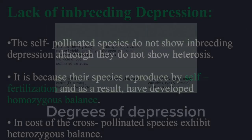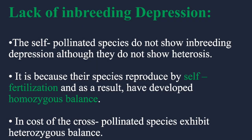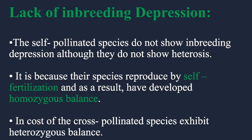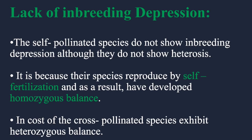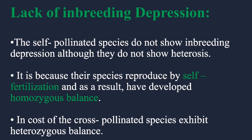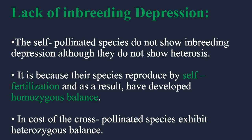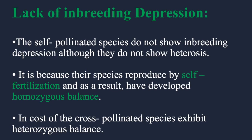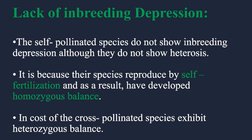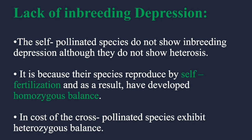The next point is the lack of inbreeding depression. Although self-pollinated plants have a high chance of being inbred, in many cases the inbreeding depression phenomenon is not present. Self-pollinated species do not show inbreeding depression, although they also do not show any heterosis. They tackle this by developing a mechanism called homozygous balance — these plants balance their homozygosity within their own plant. Just quoting this term — homozygous balance — can easily get you marks.